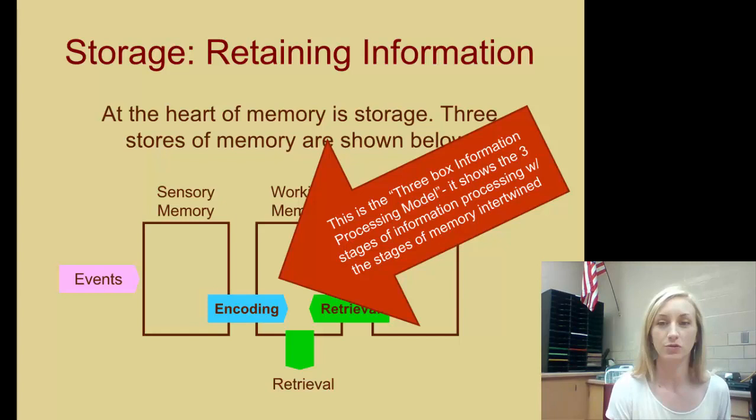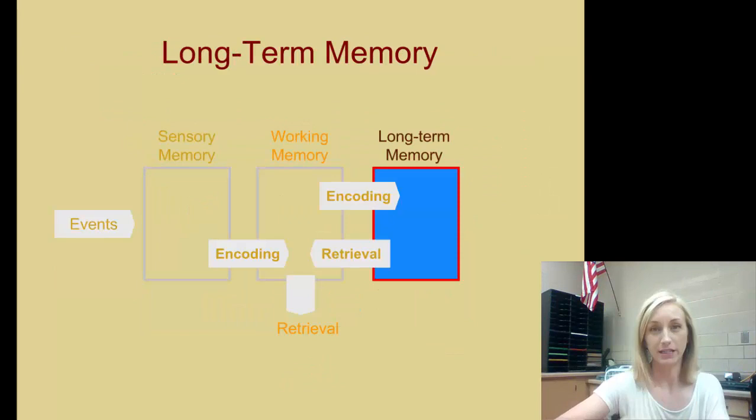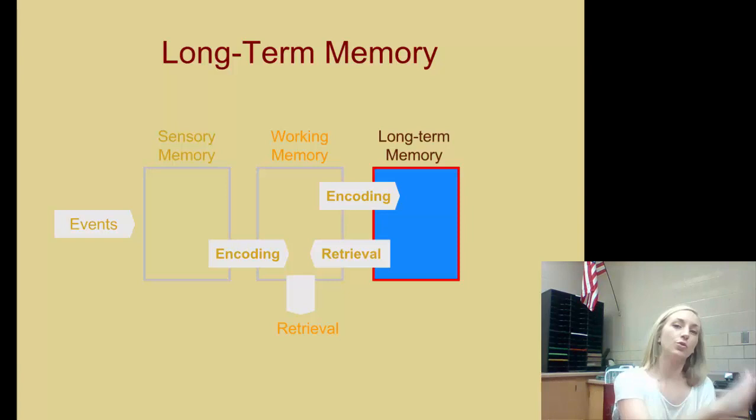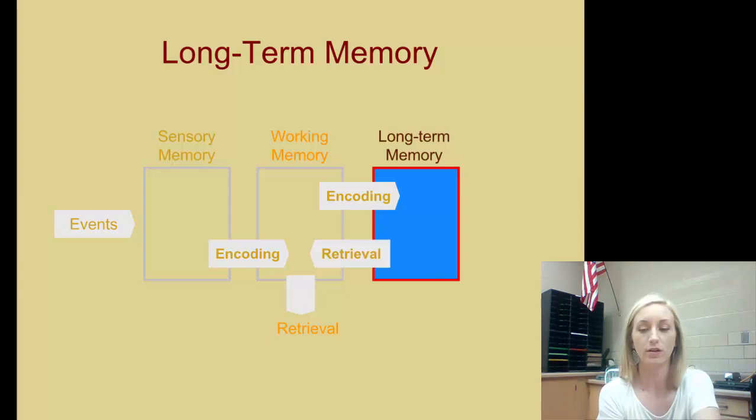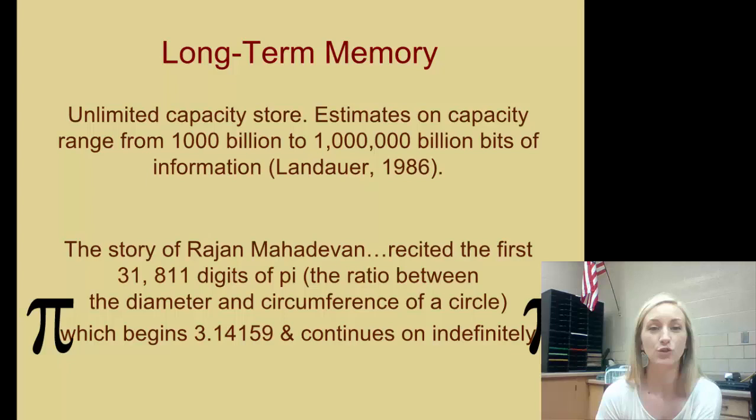Information processing involves encoding, storage, and retrieval, and the stages of memory being sensory, working or short-term, and long-term memory. Long-term memory is what we're going to talk about today because that's where we store items. Sensory and short-term or working memory is what we talk about with encoding; long-term memory is where we store the information.